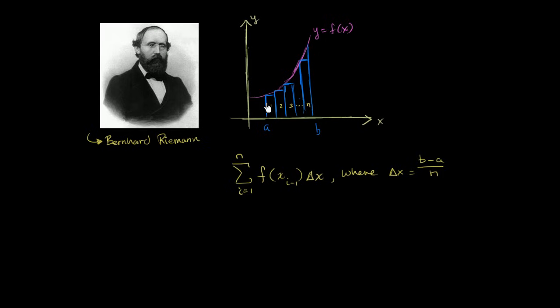And this was actually the first example that we looked at, where each of the rectangles had an equal width. So we equally partitioned the interval between our two boundaries, between a and b.